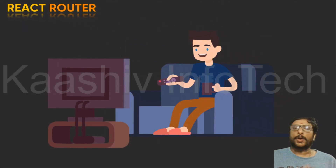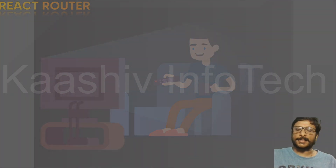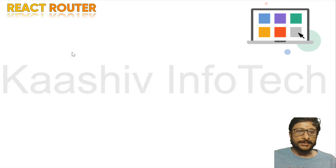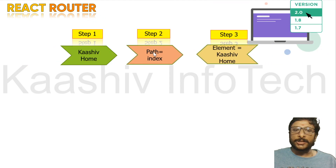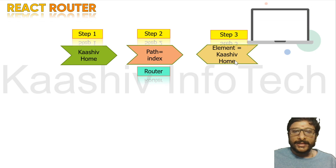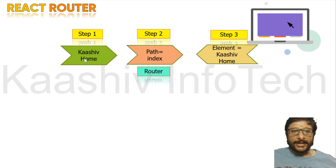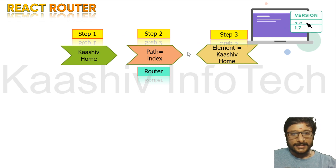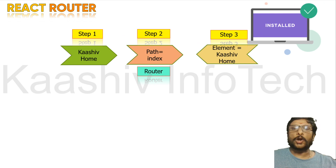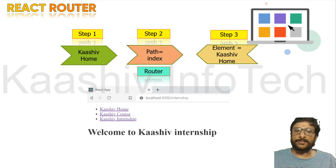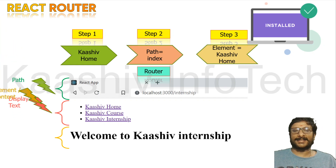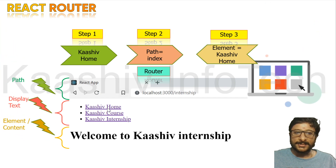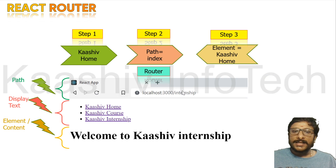How does React router work? So we have Kashi home, and it is connecting to the path index file and loading the Kashi home content — redirecting. Clicking this link loads this content. The thing in the middle is called the router. Here is the path and here is the content. Clicking the link changes the URL and loads the content — that is called the element in React.js.